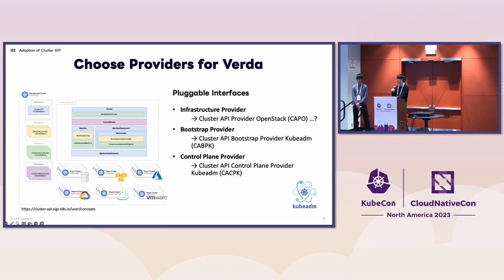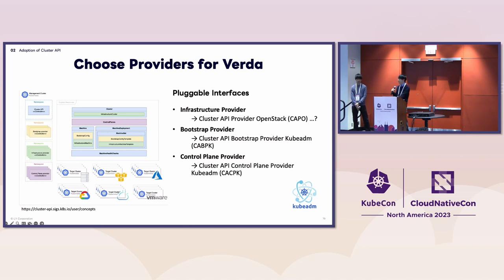Which provider did we choose? We want to use community-provided providers as much as possible. For the bootstrap provider and control plane provider, we decided to choose providers powered by kubeadm, provided by the Cluster API community. For the infrastructure provider, Verda is built on top of OpenStack, and there is a Cluster API provider for OpenStack maintained by the community — so why don't we use it?